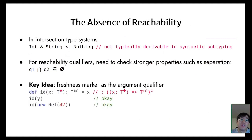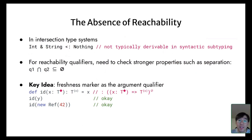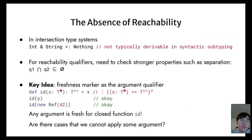The key idea to ensure separation is to use the freshness marker as the argument qualifier when defining a function. Function application then checks separation between the function and the given argument. For example, consider the identity function, which can accept any argument. The key observation is that any argument is in fact fresh for this closed function, because the function is closed and cannot observe anything from the environment. Therefore, any argument expression is fresh for the function, which is consistent with the freshness marker annotated on the function.